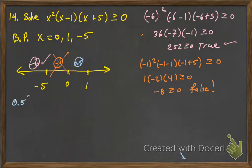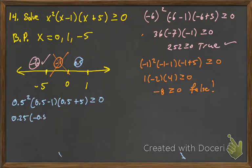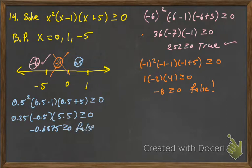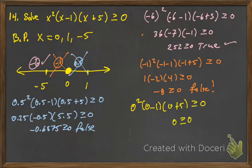We'll try 0.5: 0.5 squared times 0.5 minus 1 times 0.5 plus 5 — is that greater than or equal to 0? That's 0.25 times negative 0.5 times 5.5, which is positive times negative times positive, so that's negative and false. We'll throw that out also. We'll note that it is true for 0, because 0 squared times 0 minus 1 times 0 plus 5 equals 0, and 0 is greater than or equal to 0. So we will include 0 as a singleton.